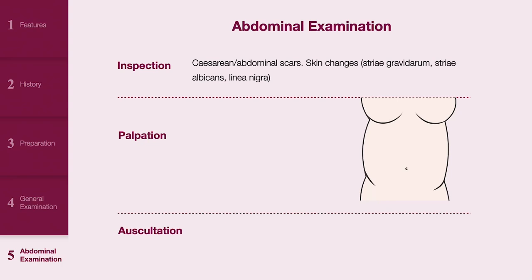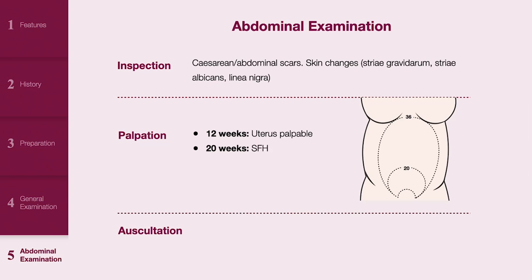Palpation: the uterus is palpable at the pubic symphysis from 12 weeks and is generally at the level of the umbilicus and xiphisternum at 20 and 36 weeks respectively. From 20 weeks, the SFH — symphysis fundal height — measurement from the pubic symphysis to the uterine fundus, correlates with the gestational age.